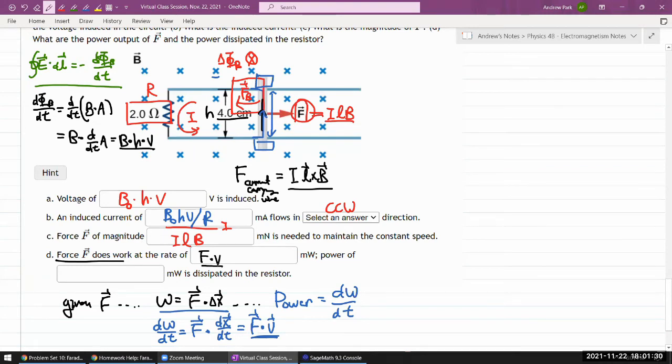So the force does work at this rate, the amount of force we calculated above times the velocity. I can leave it there and plug in all the numbers, but let me do a little bit more algebra so that you can manifestly see how these two quantities compare. I'm going to plug in the expression for force which is I L B, and I'm going to plug in the expression for I which is all this. Doing all that, I have B times B, so it'll be B naught squared times H V over R, that's the current, times B times L. So that's the expression for the power at which work is done.